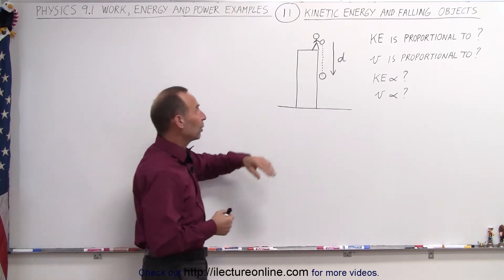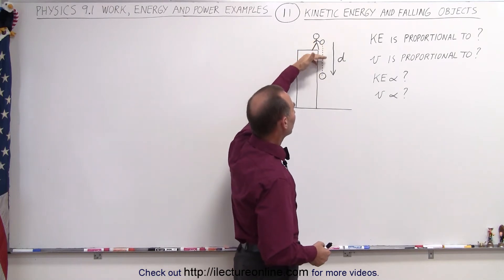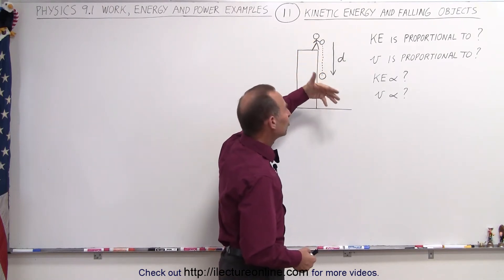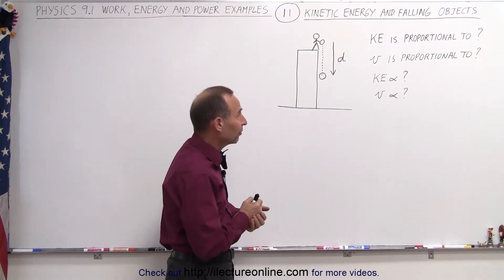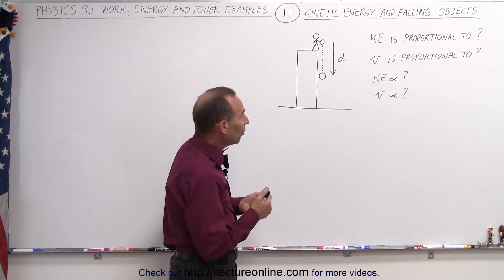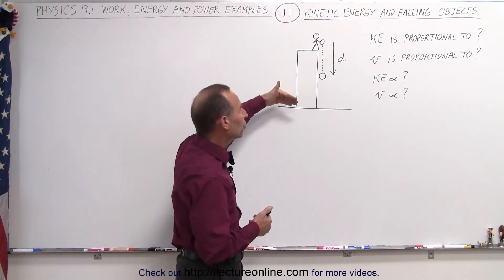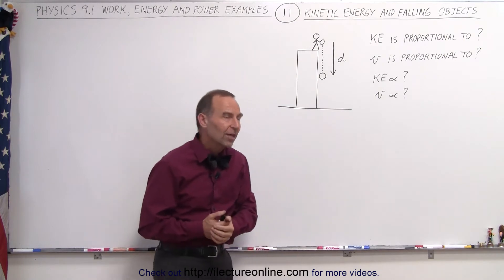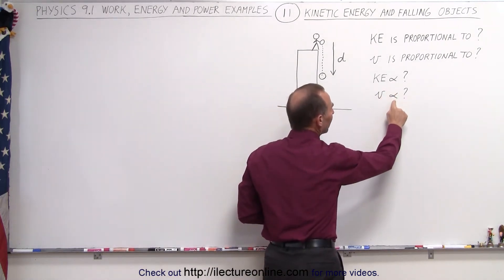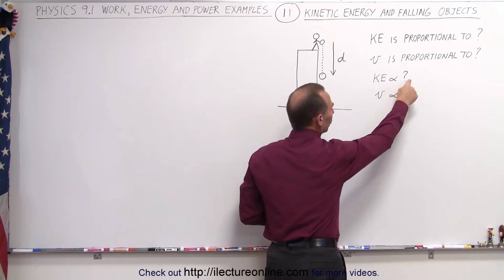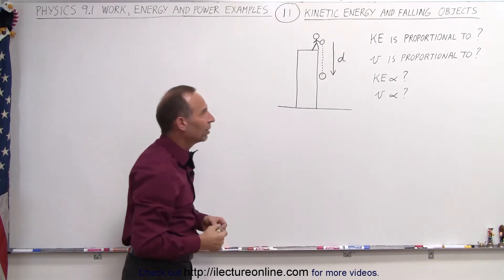As we go to a high place and we drop an object, and it drops a certain distance d, how does the kinetic energy change? What is it proportional to in terms of d, in terms of how far it's falling? Let's also find out what the velocity is proportional to in terms of the fallen distance d. The proportionality symbol is this little alpha symbol right here. So kinetic energy is proportional to what? And velocity is proportional to what, in terms of the distance that it's fallen?